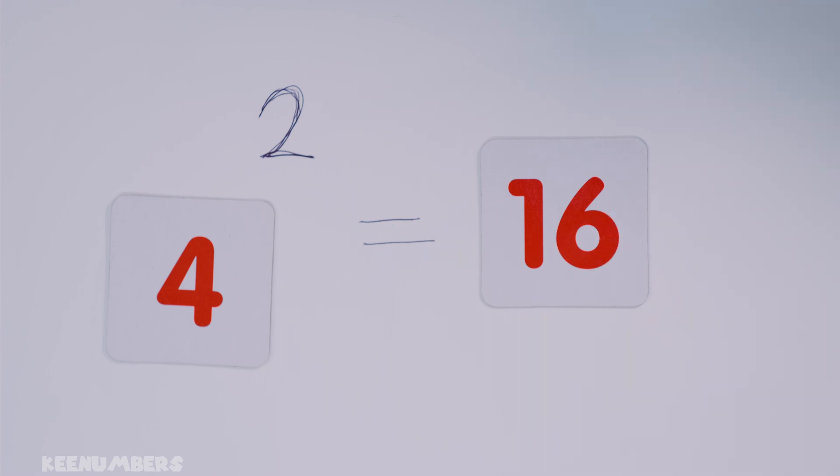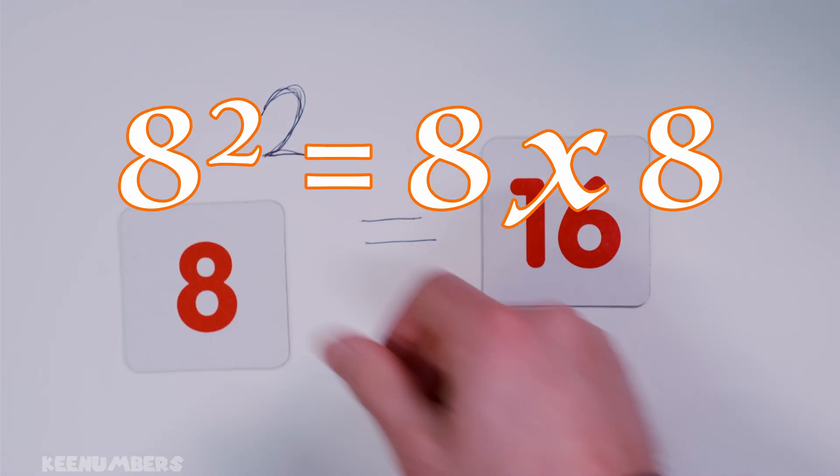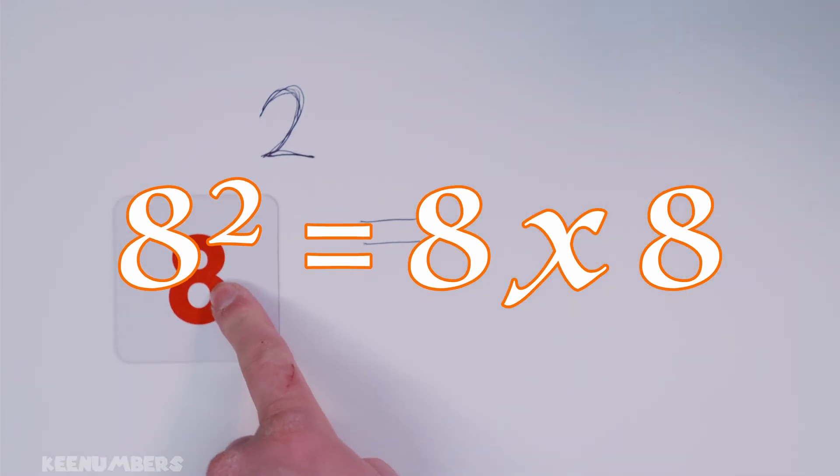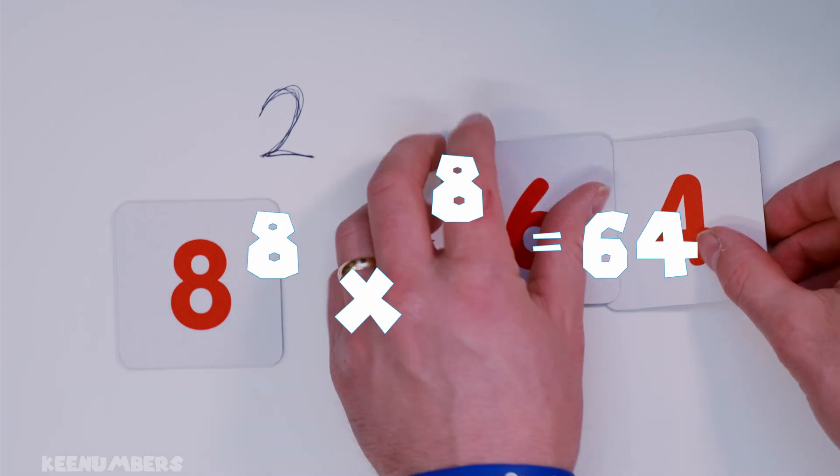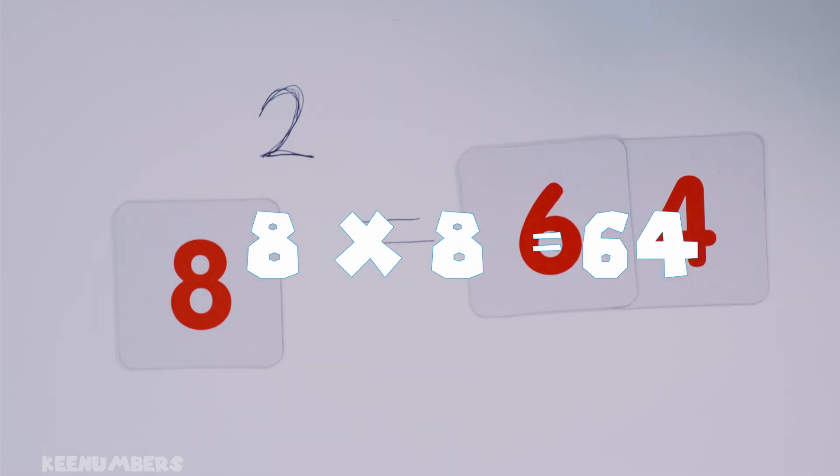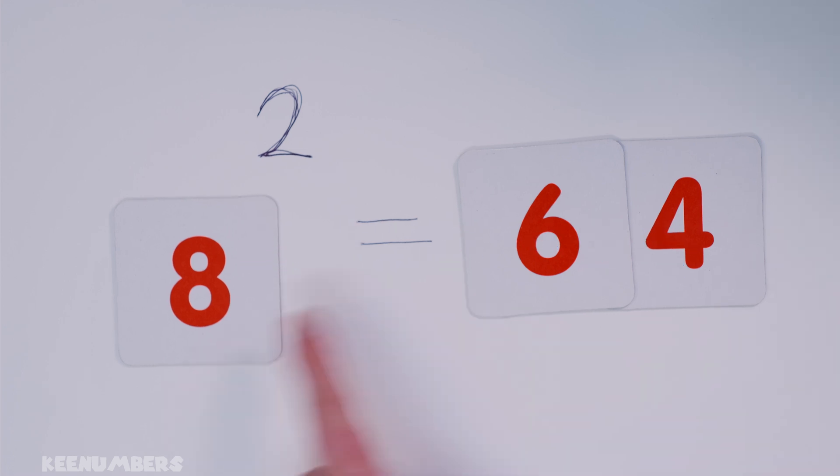We need a hard one. What about eight squared? What is eight times eight? You know the answer to that. Eight times eight. That's 64. Eight squared is equal to 64.